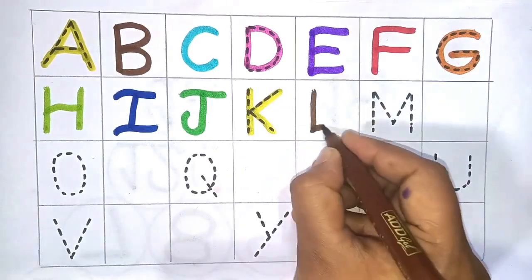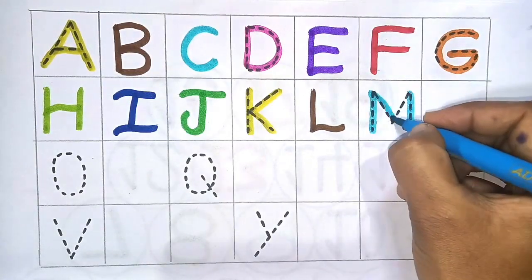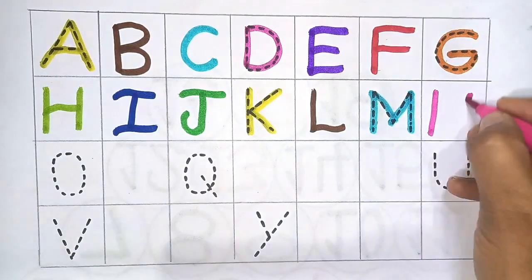Next L, L for lake. Next M, M for mouse. Next N, N for nail.